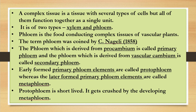Phloem derived from the procambium is said to be primary phloem. Phloem derived from the vascular cambium is represented as secondary phloem. Procambium is a type of meristematic tissue. We also discussed meristematic tissue — check the description box to find the link for the meristematic tissue video.